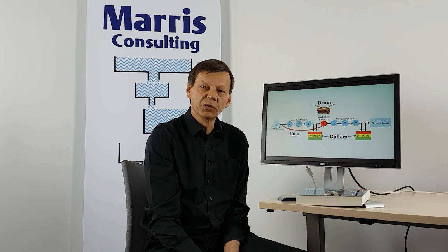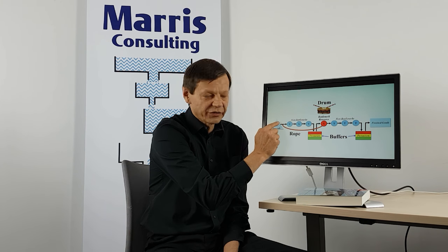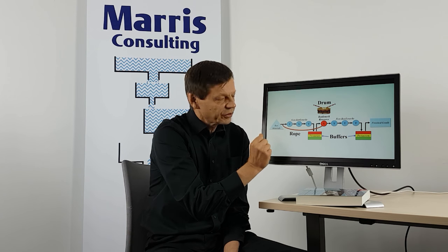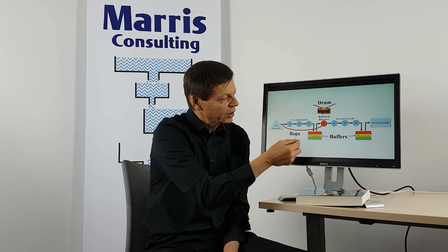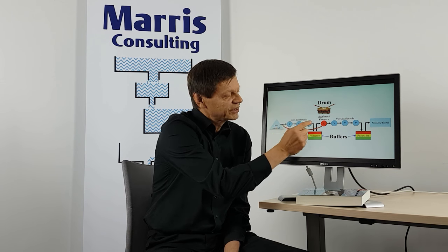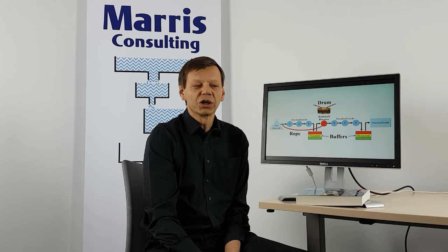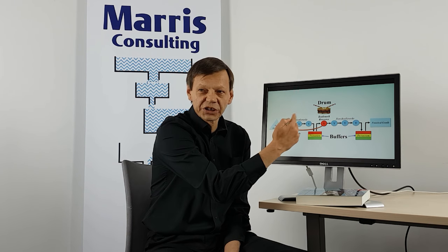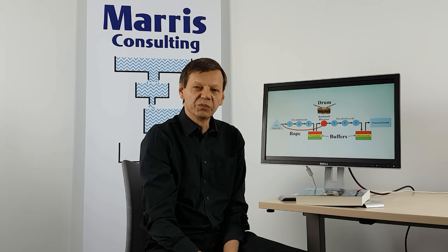The second step is the rope. The rope is the mechanism to launch the material in the factory. Let us assume that the three operations in front of the bottleneck take two days. If we've planned a particular work order in four days' time and it takes two days to get the work done in front of it, then we have to launch the raw materials in two days' time. But of course, if we do this alone, it won't work, because if there are any breakdowns, fluctuations, or disturbances, the product is going to end up late and you won't be able to meet the schedule.